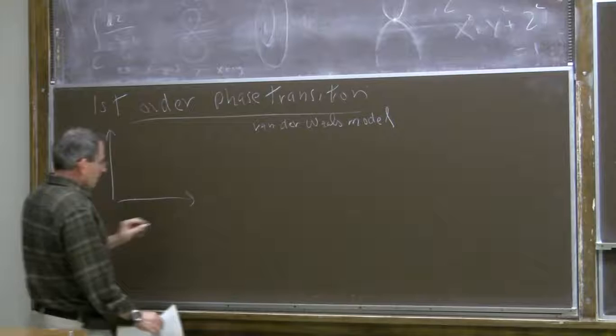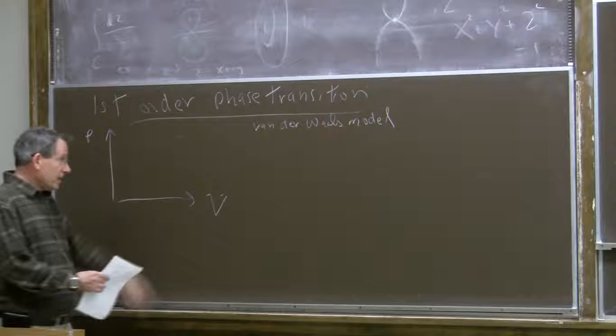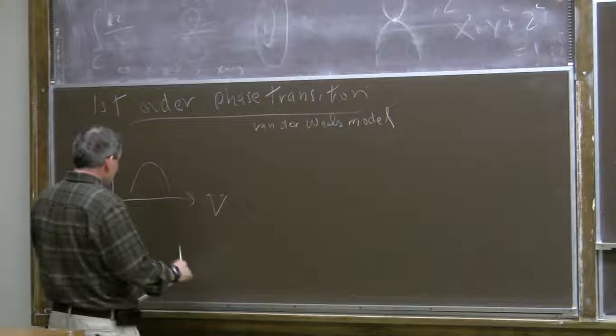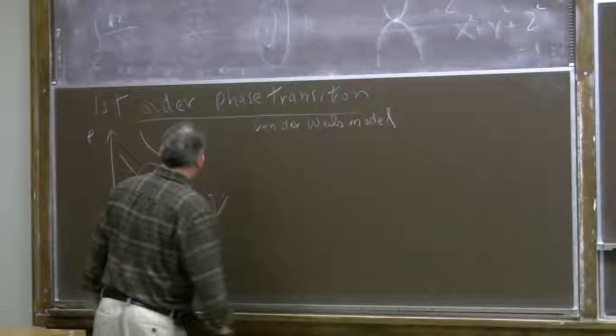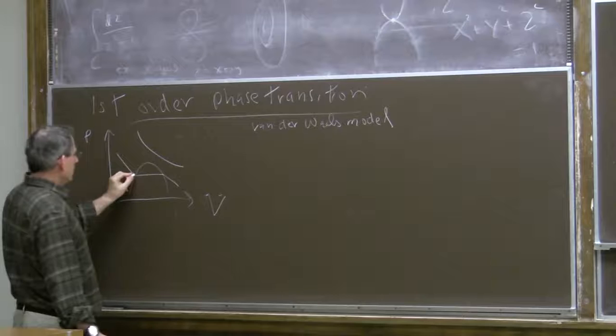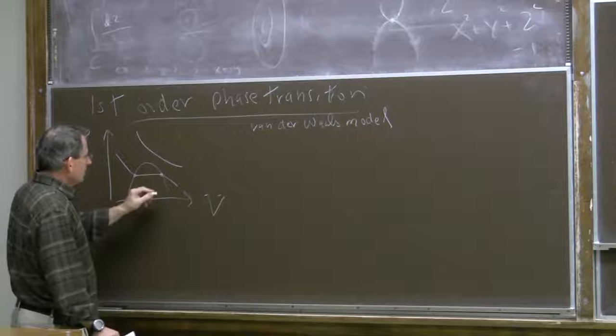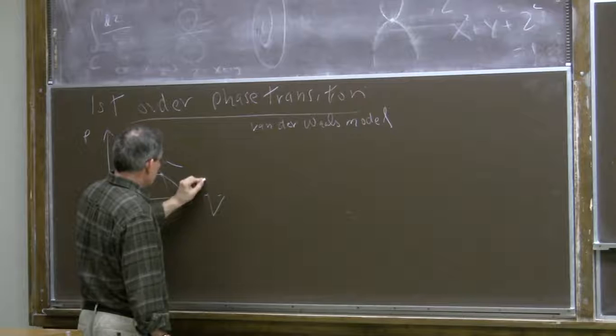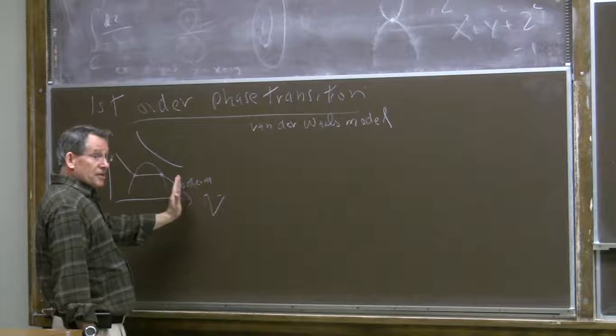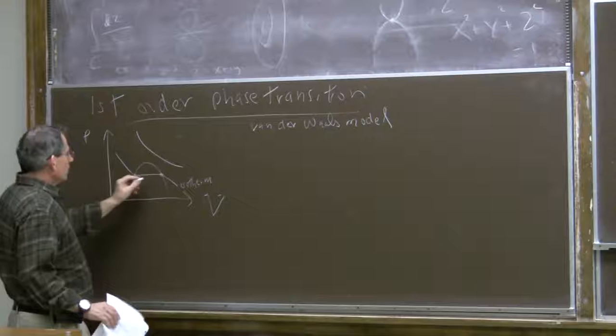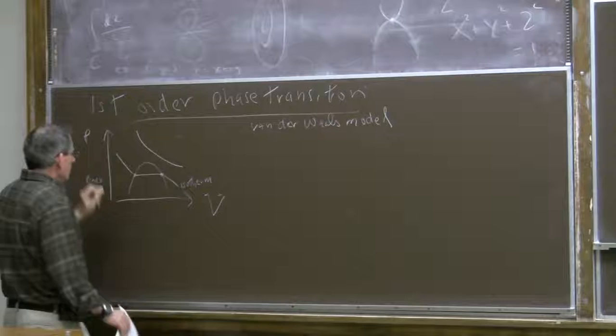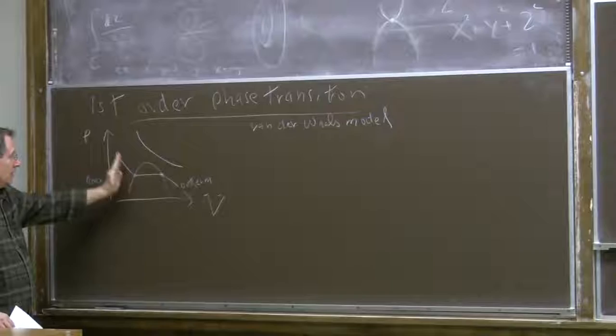If we consider the pressure-volume equation of state described by the Van der Waals equation, what we'd like to explain is coexistence of a gas and a liquid, which in the pressure-volume plane has some coexistence pressure depending on the temperature. These lines are isotherms where the temperature is fixed. If we start out with the gas and reduce the volume by compressing it, we reach the point where the gas can coexist with the liquid, then the pressure stays fixed at a coexistence pressure until the gas is entirely converted to liquid, and then the pressure starts to increase again.